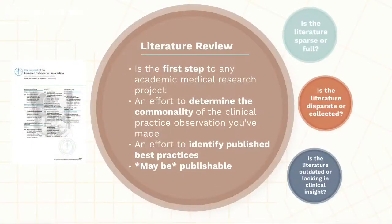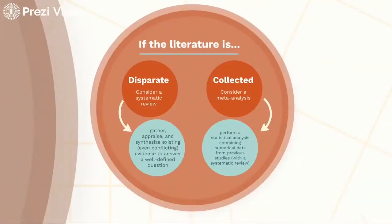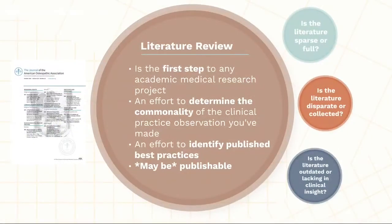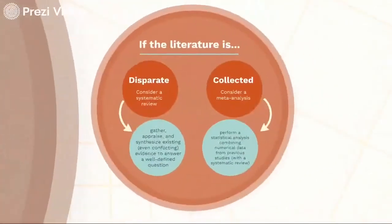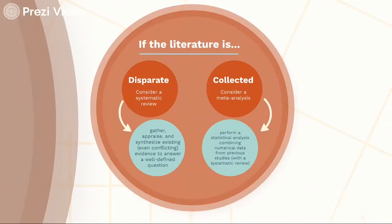Next, consider whether the literature is disparate or if that collection has already happened. If it's disparate, you should consider a systematic review where you would gather, appraise, and synthesize all of the previously published material in a single place to provide a hopefully more definitive answer to a well-defined question. The systematic portion refers to how you structure it and document that methodology. You should include all relevant evidence that meets your criteria, even if it's conflicting — your systematic review would be a snapshot into the state of the science. If it's already been collected into a systematic review, perhaps consider a meta-analysis, which takes things a step further, combining all quantitative data from previously published studies and performing a statistical analysis on it yourself. The goal is to find strong evidence to answer the clinical question you started with.